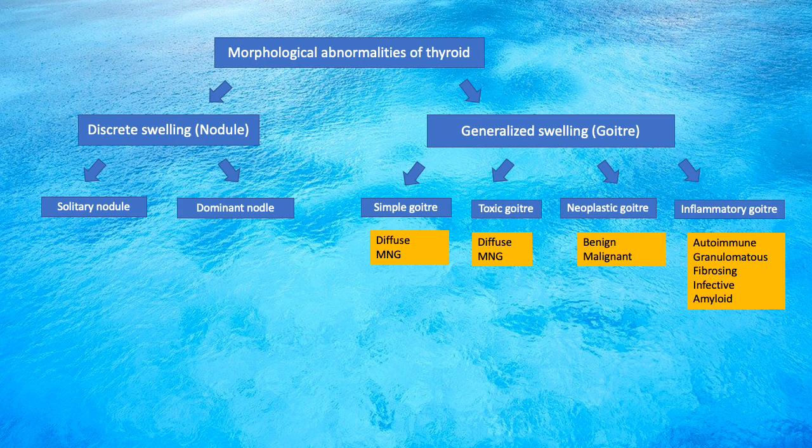To summarize: there are two kinds of morphological abnormalities of the thyroid gland — discrete thyroid swelling (nodule) and generalized thyroid swelling (goiter). Discrete thyroid swelling can be a solitary nodule or a dominant nodule of a multinodular goiter. Generalized thyroid swelling can be simple, toxic, neoplastic, or inflammatory goiter.